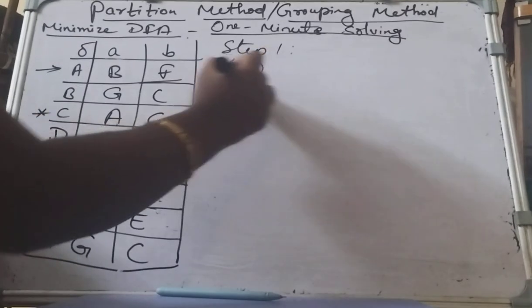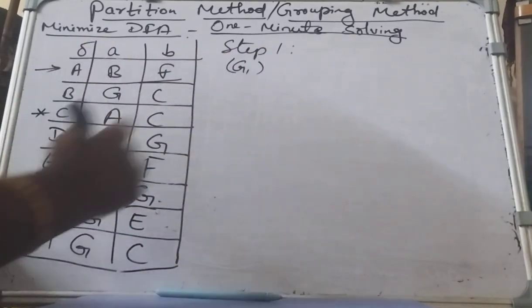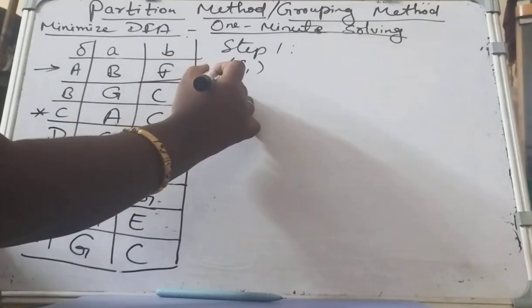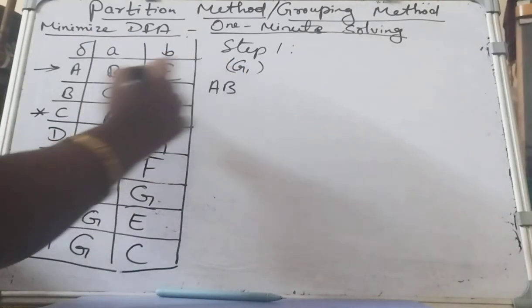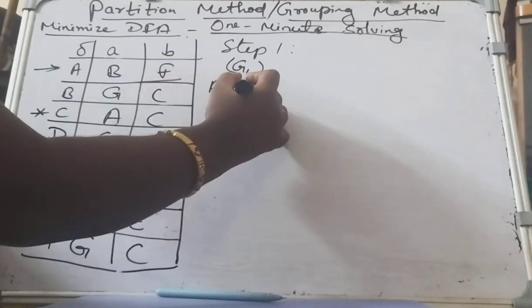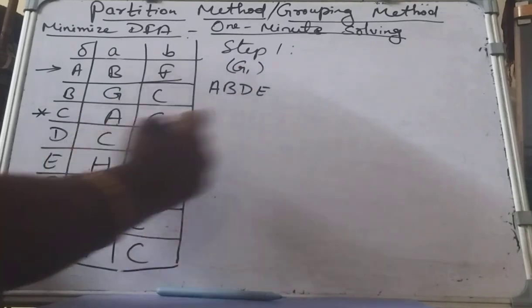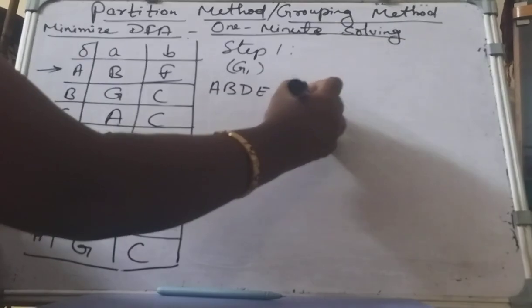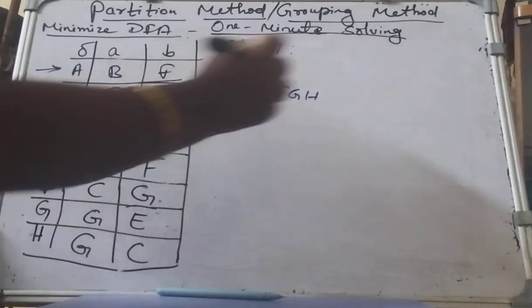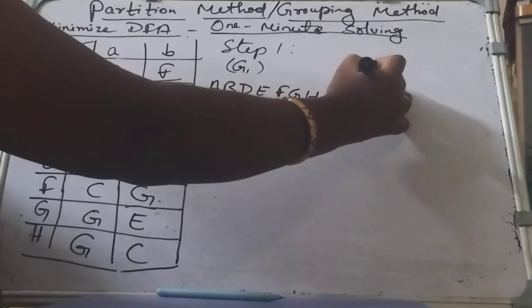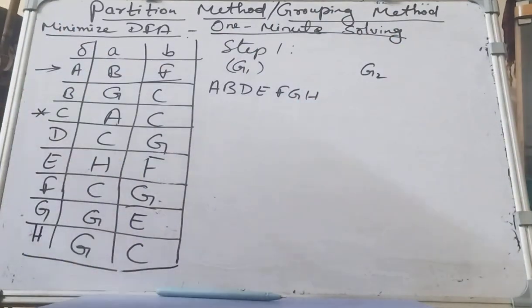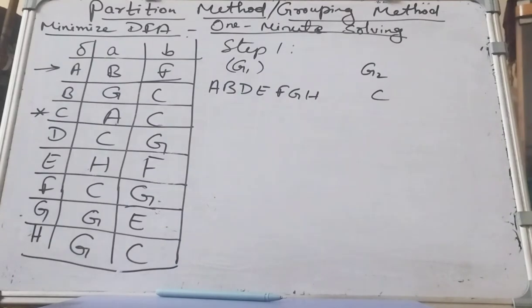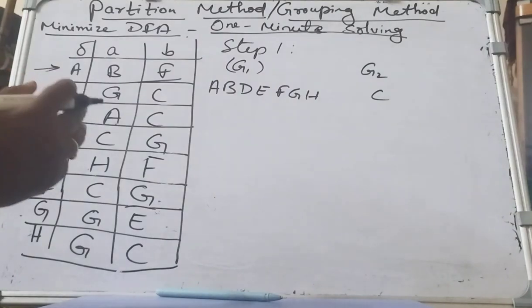You have to group the final and non-final states. In this problem we have only one final state, which is C, and all the rest are non-final states. So we are categorized into two groups. G1 contains all non-final states: A, B, D, E, F, G, H. G2 contains all final states — here just C. This is the first step.